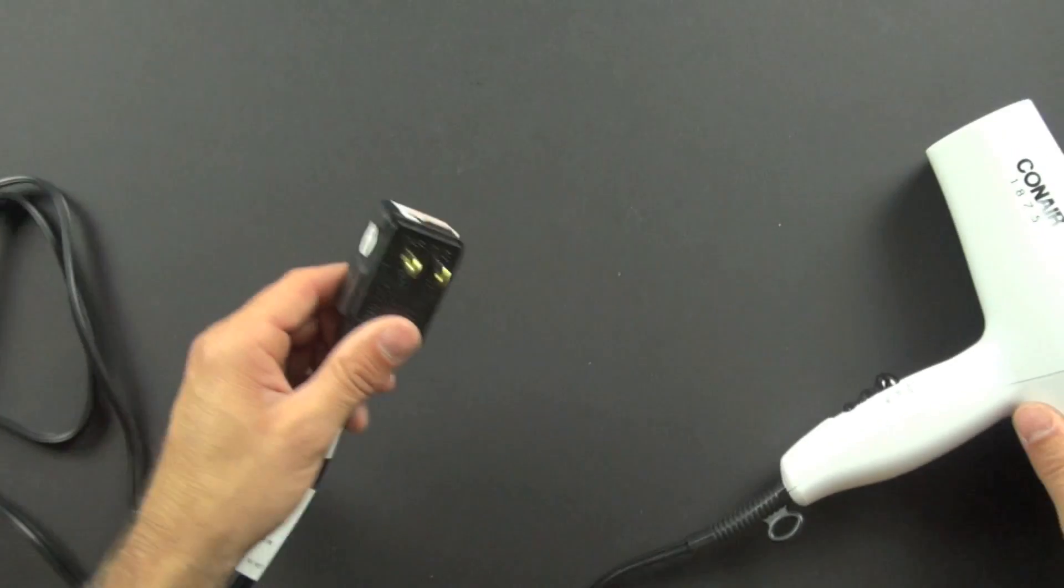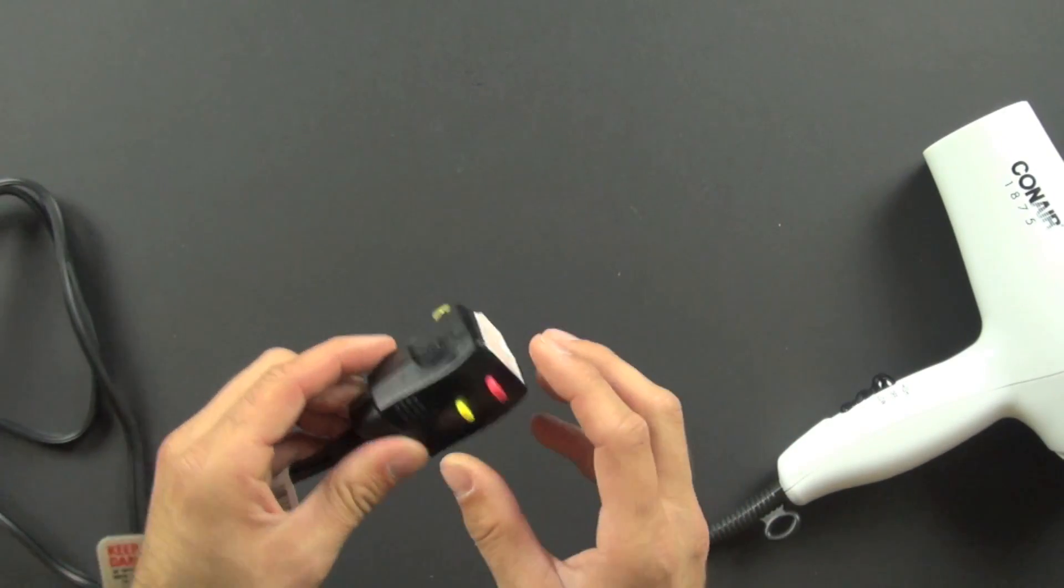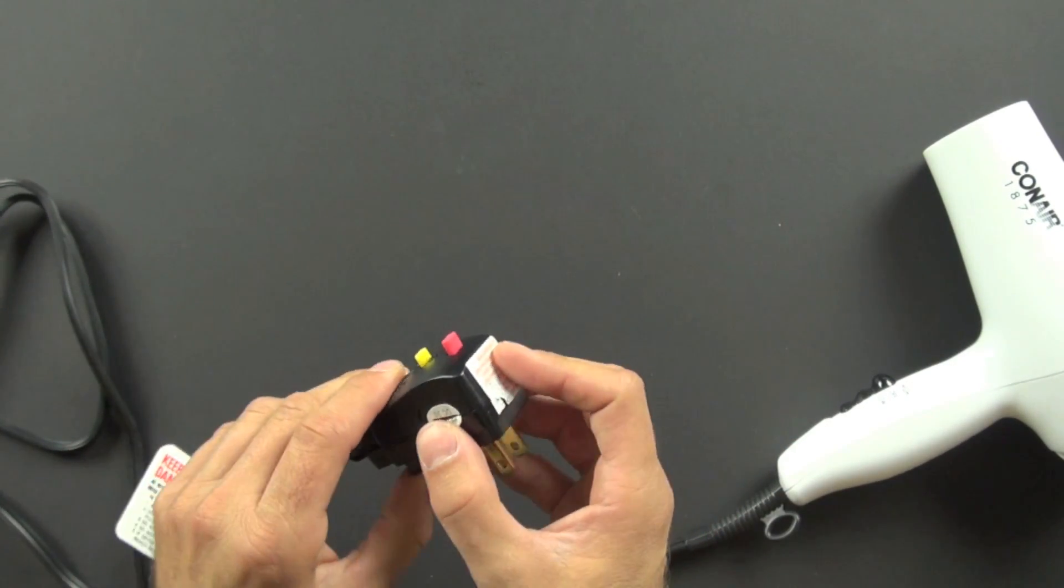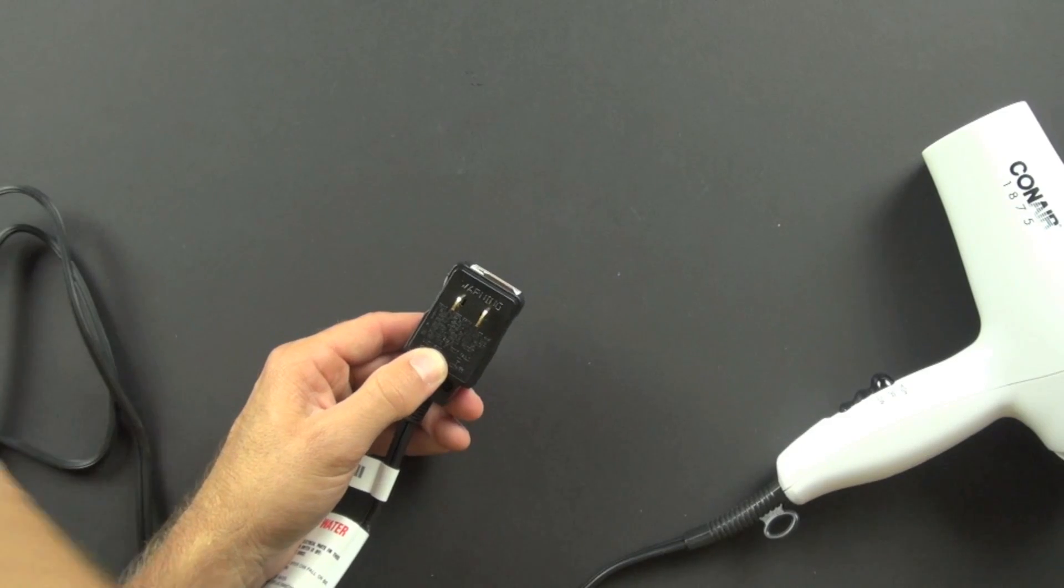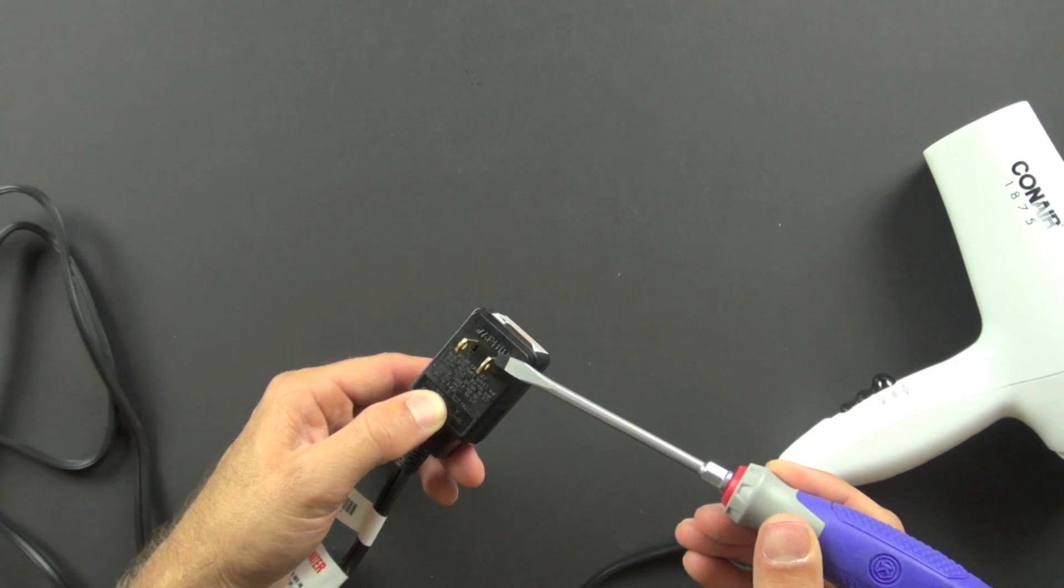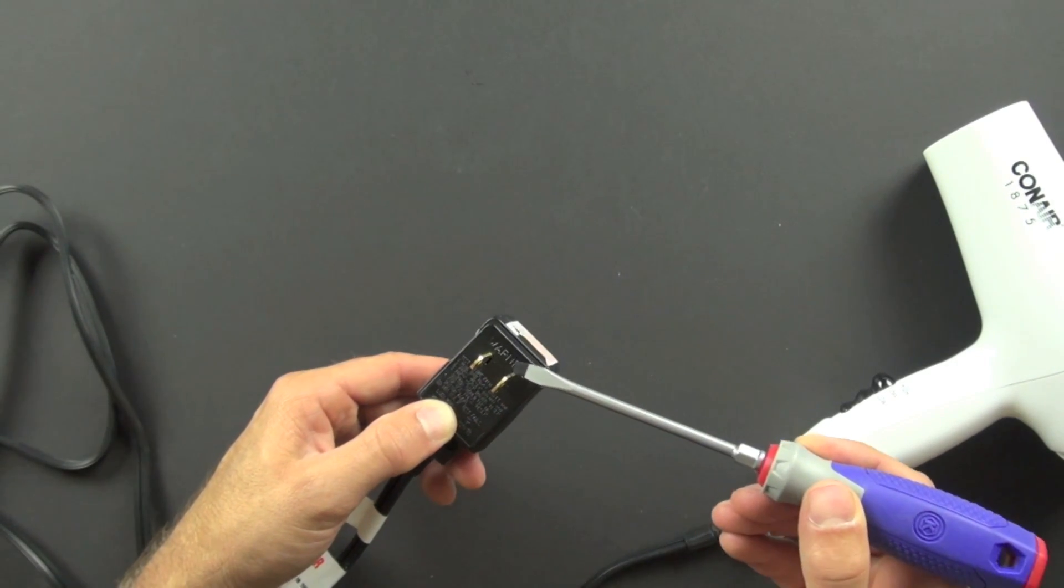The first thing I want to take a look at is the plug here. This is called a ground fault interrupter circuit plug, and it has two different sized prongs right here. There's a larger prong and a smaller prong, and that's very important.